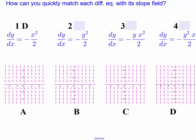One matches with slope field D, two matches with A, three matches with C, and four matches with B. Of course, feel free to contact me for office hours if you want some more discussion on that.